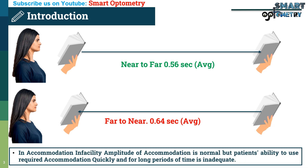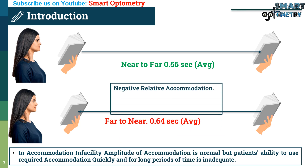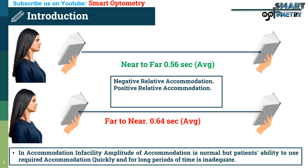In accommodative infacility, the amplitude of accommodation is normal, but the patient's ability to use the required amount of accommodation quickly and for long periods of time is inadequate. So as an optometrist, if you check only amplitude of accommodation, you may miss the diagnosis of accommodative infacility. The tests that can specifically diagnose accommodative infacility are negative relative accommodation, positive relative accommodation, monocular accommodative facility, and binocular accommodative facility.